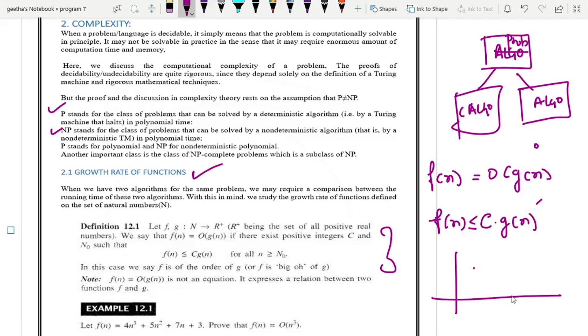If f of n is less than or equal to c some constant into g of n. That means, you have a function f of n and you have to find out c into g of n and tell from when it is going to get a greater value than f of n. At some point of time from n naught, you get c into g of n is bigger. Till then you can observe, it is having lesser value than the f of n.